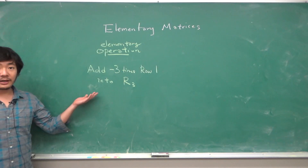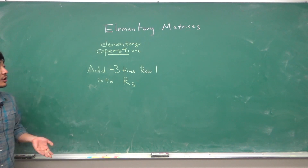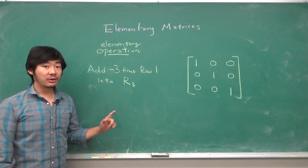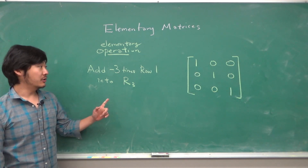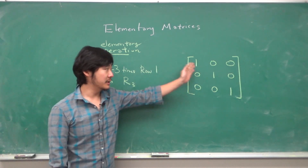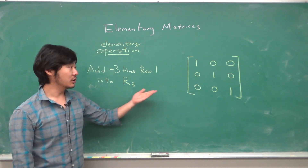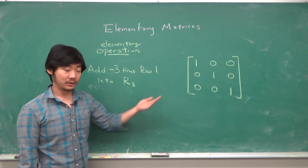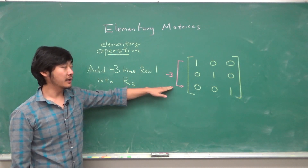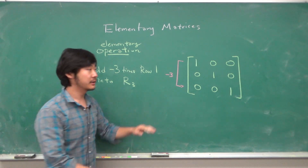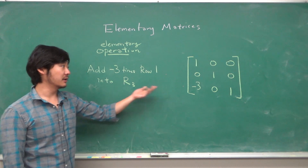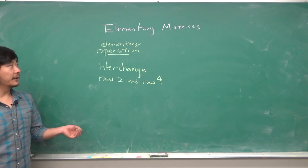How can we get our elementary matrices? Let's say we have the elementary row operation: add negative three times row one into row three. To get the corresponding elementary matrix, we take the identity matrix — a square matrix with ones on the diagonal and zeros everywhere else — and then we just do the row operation to this identity matrix. If we do negative three times the first row and add it into that row, we get this matrix, and this is the elementary matrix that corresponds to this row operation.